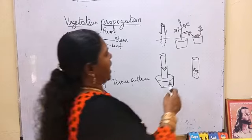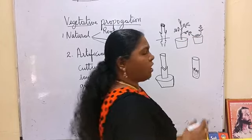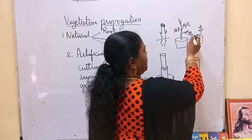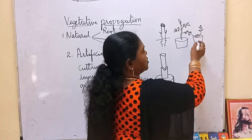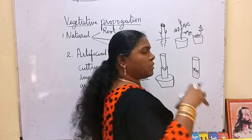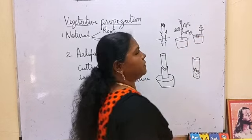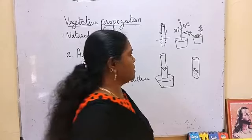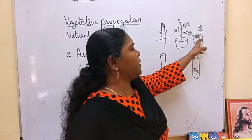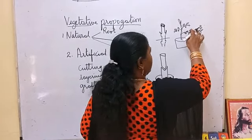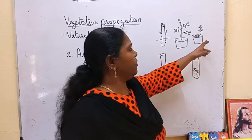Layering is another artificial method, easily done with jasmine. Select a long branch, remove leaves near two or three nodes, and keep that part of the branch in soil in another pot with a stone over it to keep it down. Water both pots. After 15 to 20 days, roots will be visible on the soil surface at the nodes. Then cut the branch — now we have obtained another plant. This method is called layering.